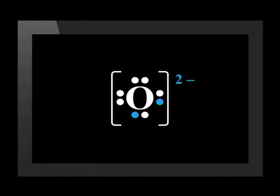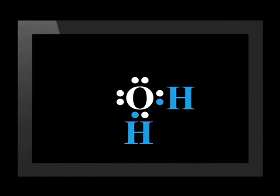Oxygen may gain 2 electrons to form the oxide ion, or oxygen may share these 2 electrons in 2 covalent bonds. We can represent the oxide ion in the Lewis dot diagram. It doesn't matter whether we use dots or crosses and which colors we use, as long as our diagram is clear. This is the water molecule in the Lewis dot diagram. Water is an example of a molecule in which oxygen shares 2 electrons.